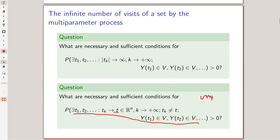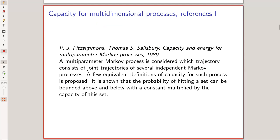The situation also reminds one of a Wiener test. For a one-parameter process we have a Wiener test, and a similar Wiener test for multi-parameter processes may be possible. There is one paper where this was done — by the same authors as the paper being presented, but for random walks. Their methods might extend to processes as well. The key paper to be discussed is Fitzsimmons–Salisbury, 'Capacity and Energy for Multi-parameter Markov Processes.'